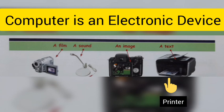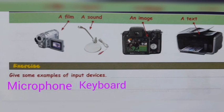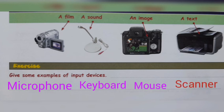Let's do another exercise. Give some examples of input devices: microphone, keyboard, mouse — these are all input devices. A scanner is also an input device. Do you know why? We can scan a text or a picture from a paper to the computer. We put a paper in the scanner machine and scan that paper to the computer, so the scanner is an input device.